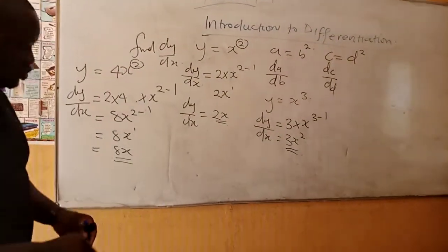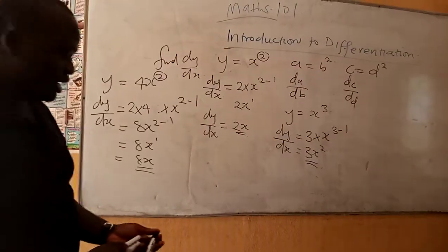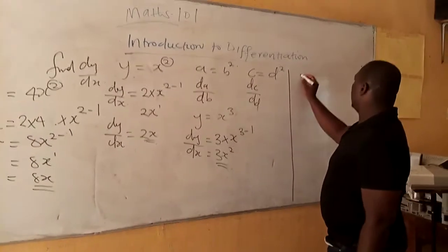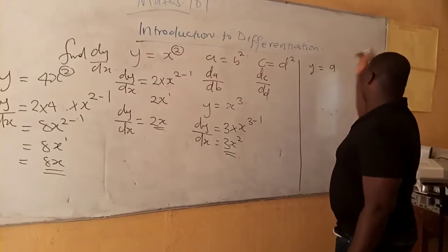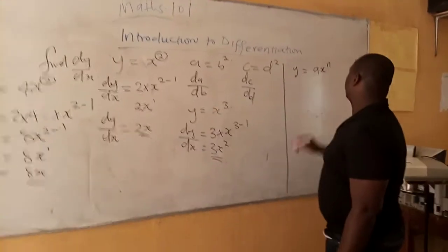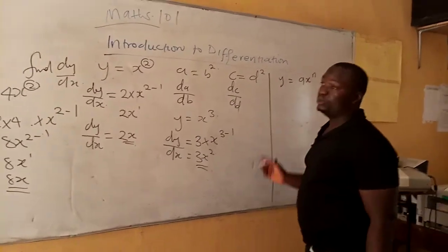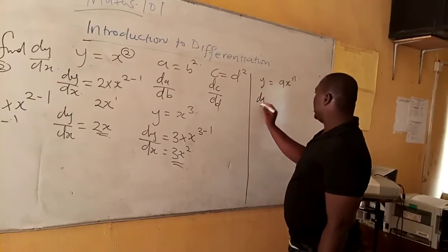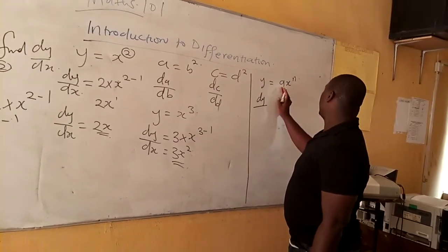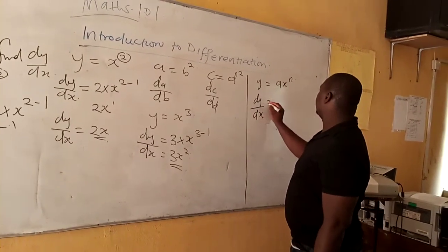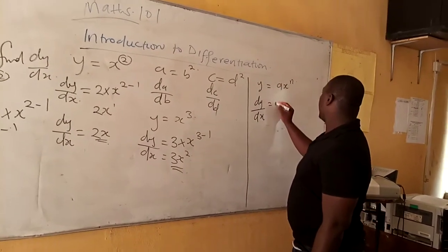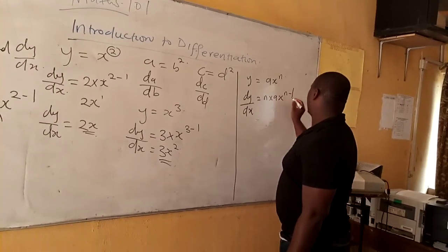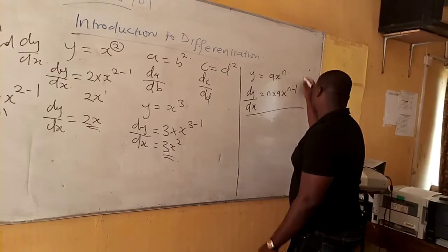Now, you need to note that there are some formulas you need to know. I can write that y is equal to ax to the power n. If you want to use the formula, then dy over dx is equal to n times a times x to the power n minus 1. You can use this formula to solve this.